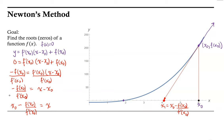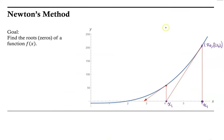Now we use this x₁ value to create a new tangent line. Having created the first tangent line to approximate the true zero of the function, we have our first approximation x₁, and now we want to create our second approximation. We build the tangent line to the curve at (x₁, f of x₁). Following the same process, the tangent line will be: y equals f prime at x₁ times (x minus x₁) plus f at x₁.